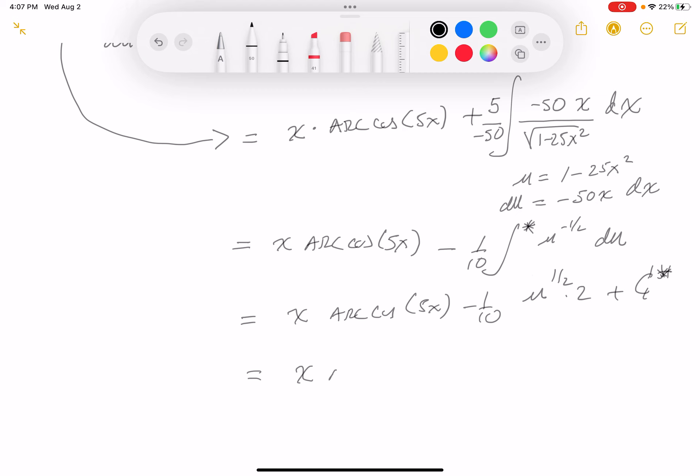So you get x arc cosine 5x. This would give me minus 1 fifth. And that's going to be the root of plus c. The root of what? The root of u. What's u? It's 1 minus 25x squared. Little box on it.